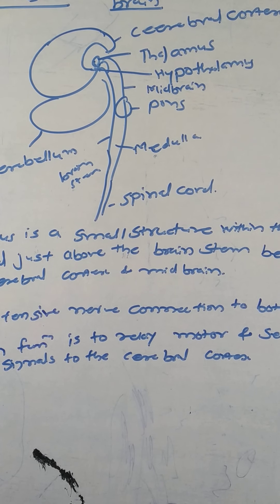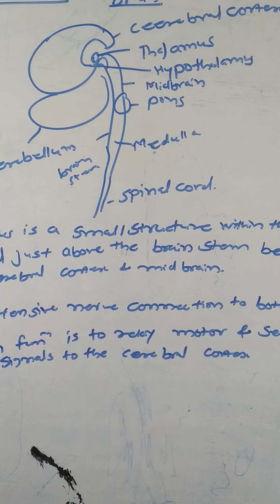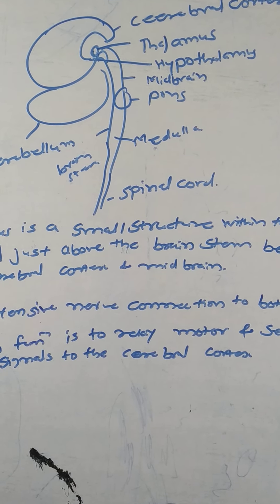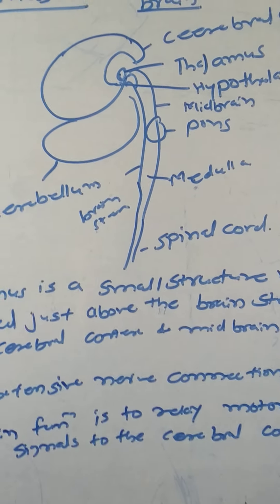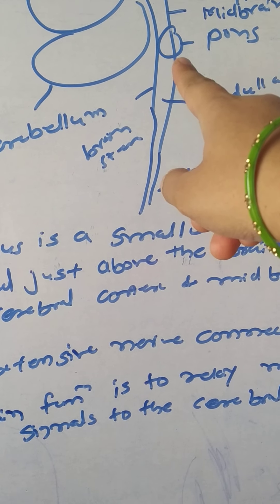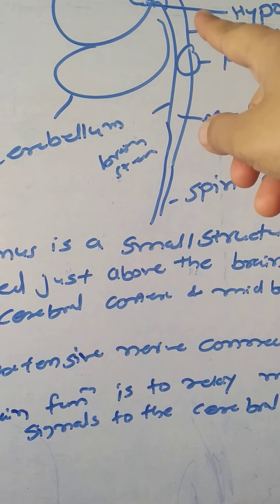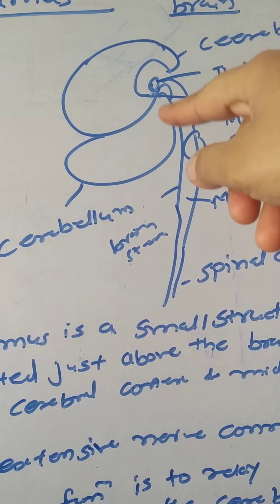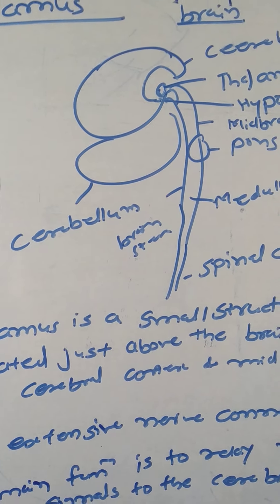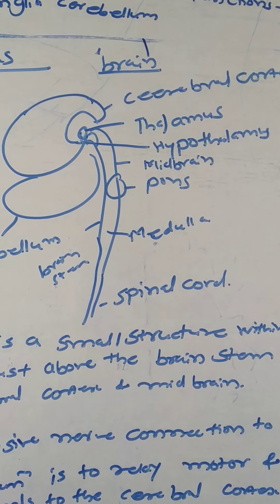Disorders of the thalamus include ataxia, pain syndrome, visual disorders, a variety of neurophysiological conditions, and coma. The main function is to collect information from the spinal cord and brain stem and relay it to the cerebral cortex. It acts as a relay center — that is the main function of the thalamus.